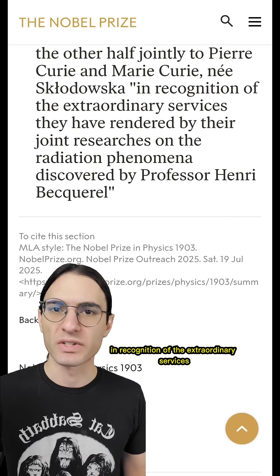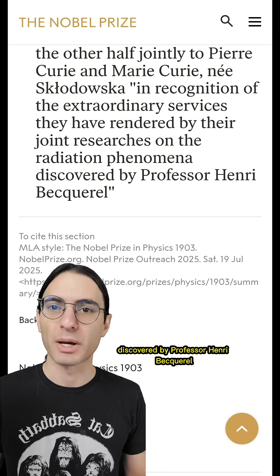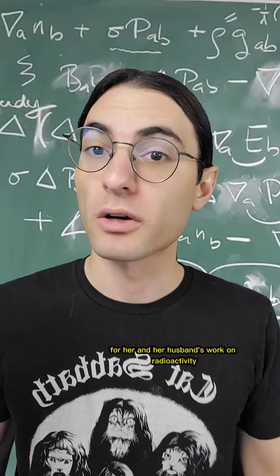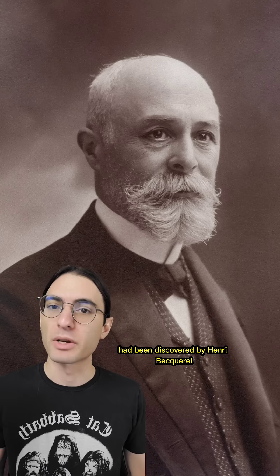Maria Sklodowska-Curie and her husband Pierre jointly shared in half the 1903 Nobel Prize in Physics, in recognition of the extraordinary services they have rendered by their joint researches on the radiation phenomena discovered by Professor Henri Becquerel. This prize was awarded for her and her husband's work on radioactivity, which just a few years prior had been discovered by Henri Becquerel.